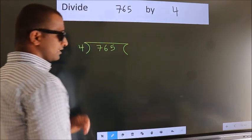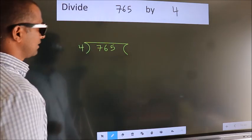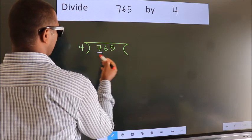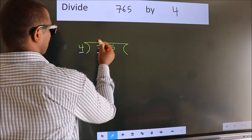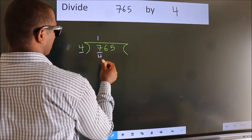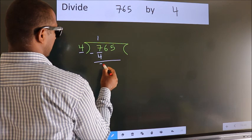This is your step 1. Next, here we have 7, here 4. A number close to 7 in 4 table is 4 ones, 4. Now, we should subtract. We get 3.